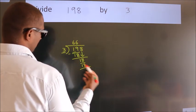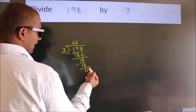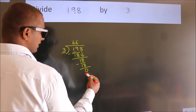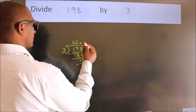When we subtract, we get 0. After this, no more numbers to bring it down. And we got remainder 0. So, this is our quotient.